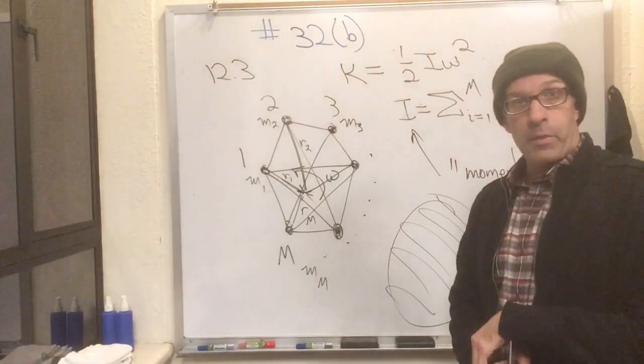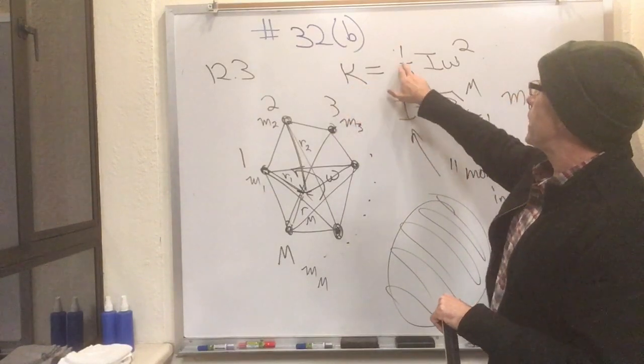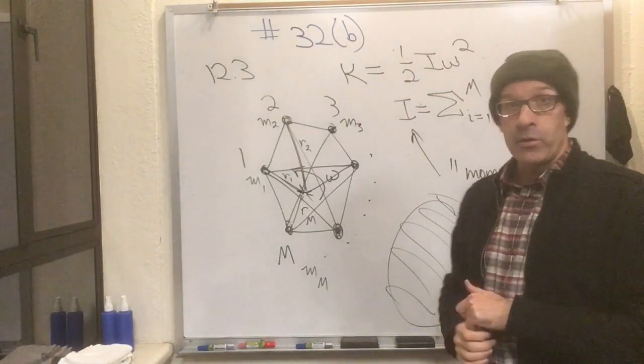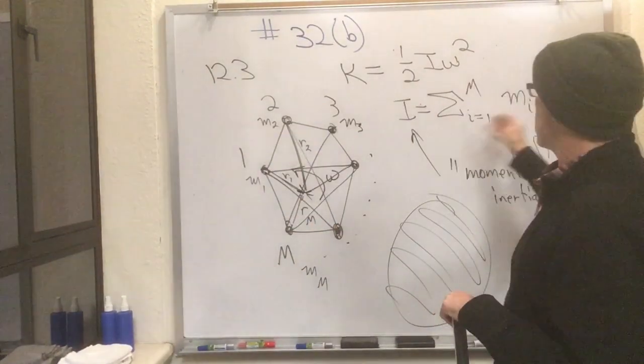Well, I hope that wasn't so bad. The upshot here is the kinetic energy of a rotating body is one-half I omega squared. I you can get from a table, or if it's a discrete object, you can sum it up yourself.